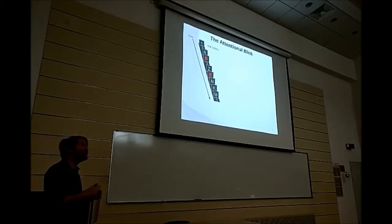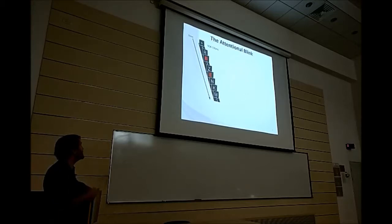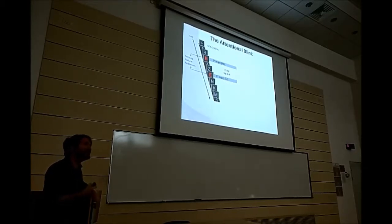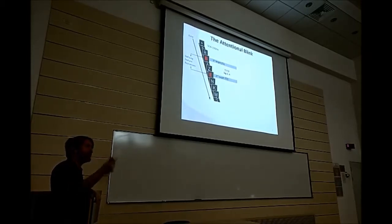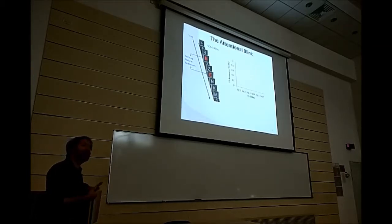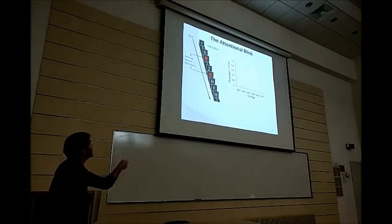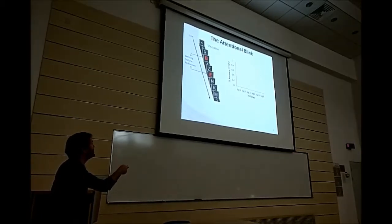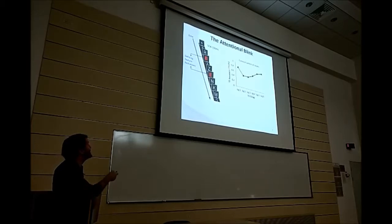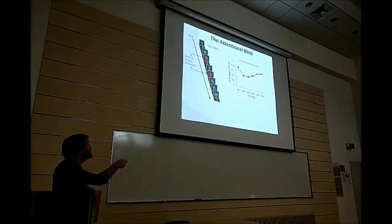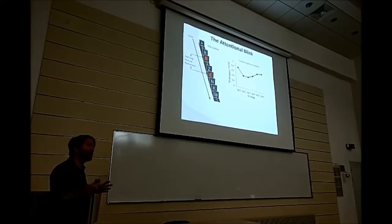In the attentional blink, participants usually view a stream of stimuli appearing one after the other and have to report two targets — in this case, the two red targets. The defining feature is then being red. What's important is that the temporal lag between the targets is manipulated — it can be either a close lag or farther out. The usual result is that when we map T2 accuracy as a function of lag, we find that at lags 2 and 3 there's a dip, a disruption to identification, which dissipates after about 500 to 600 milliseconds. That's the attentional blink.